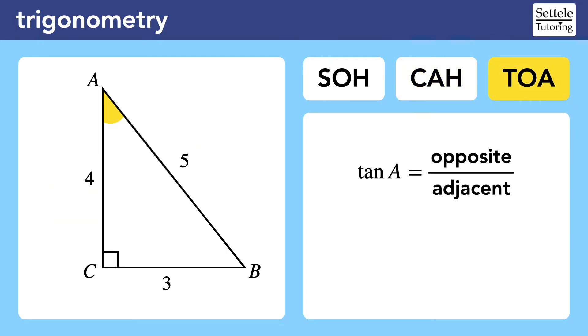TOA stands for tangent equals opposite over adjacent. Still focusing on angle A, the opposite side is 3, and the adjacent side is 4. So the tangent of A is equal to 3 fourths. Now if we switched our focus to angle B, then the tangent will be different. This time, the opposite side is 4, and the adjacent side is 3. So the tangent of B is 4 thirds, not 3 fourths.